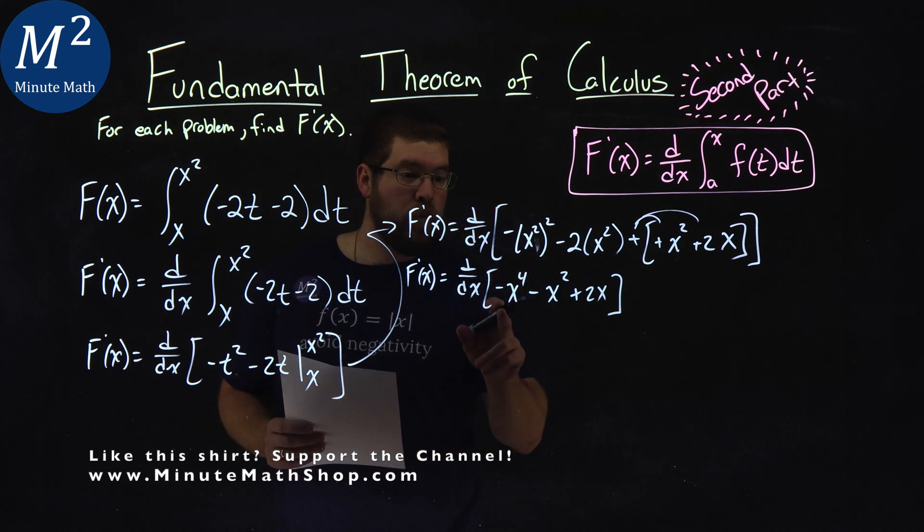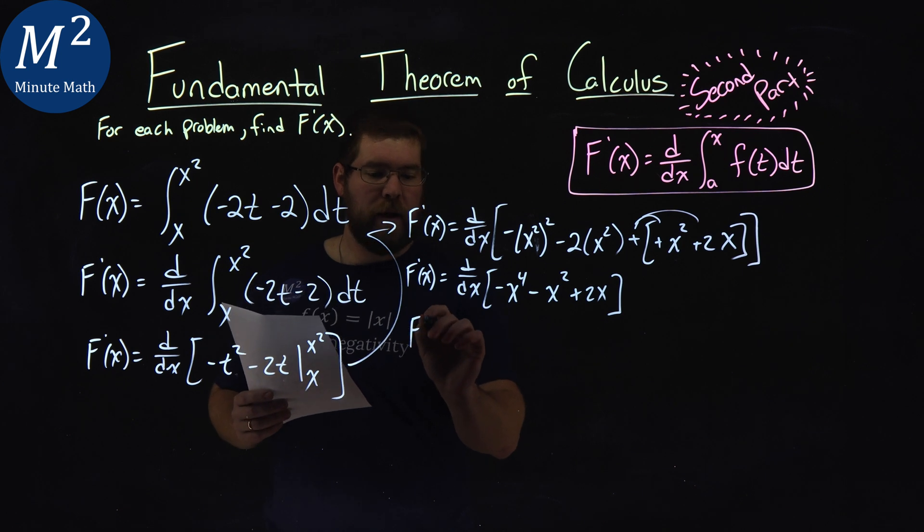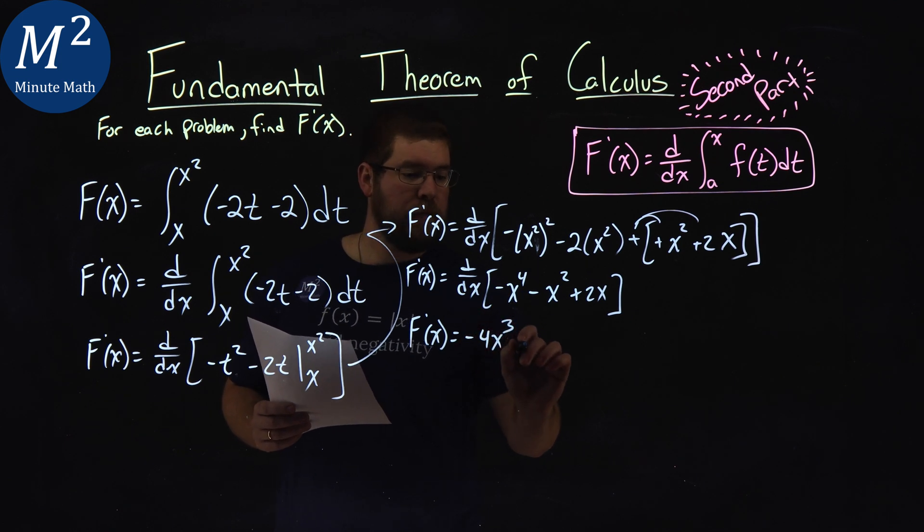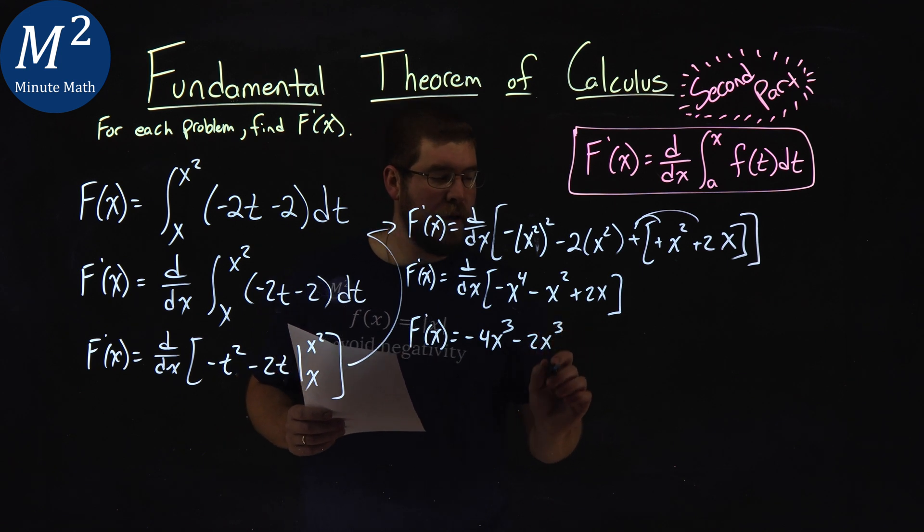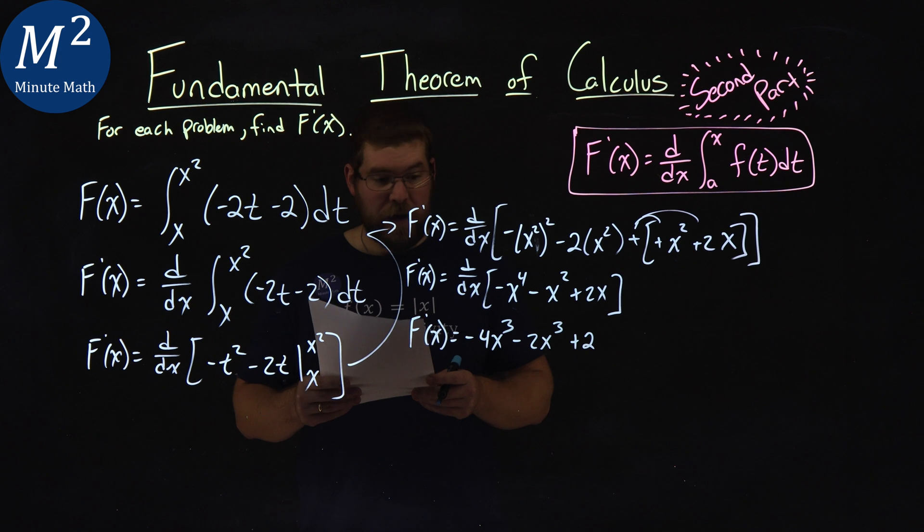From there, we need to find the derivative of this function. So f prime of x is equal to, derivative of negative x to the fourth power is negative 4x to the third, derivative of x squared is minus 2x, and the derivative of 2x is 2. And there we have it.